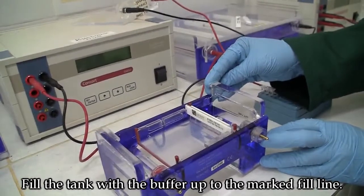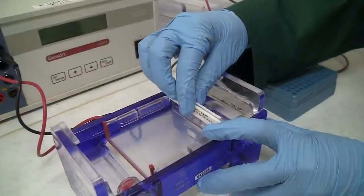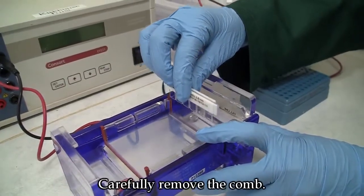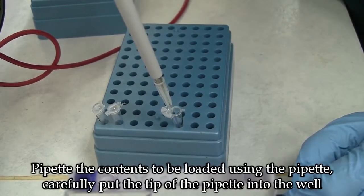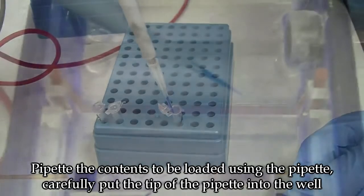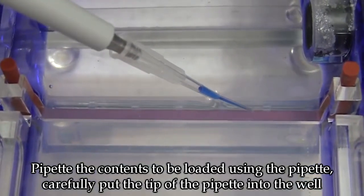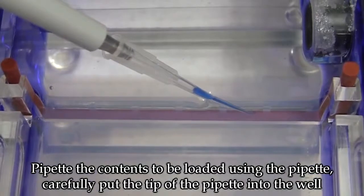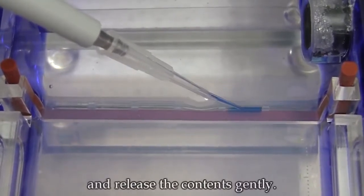Fill the tank with the buffer up to the marked fill line. Remove the comb. Pipette the contents to be loaded and carefully put the tip of the pipette in the well and release the contents gently.